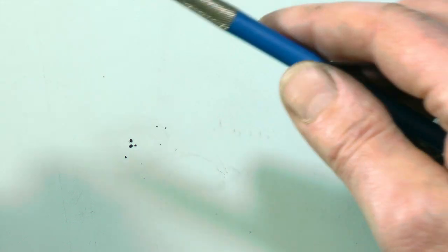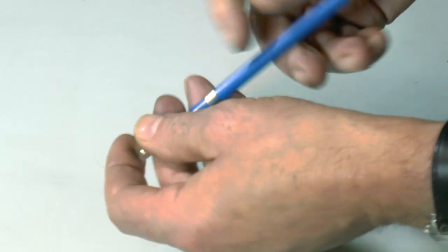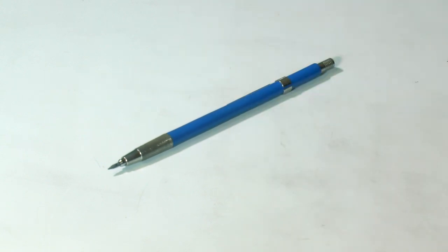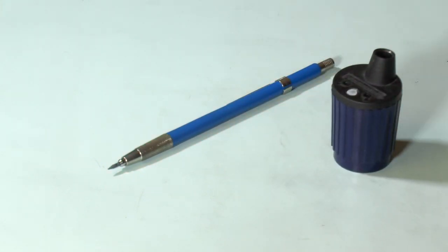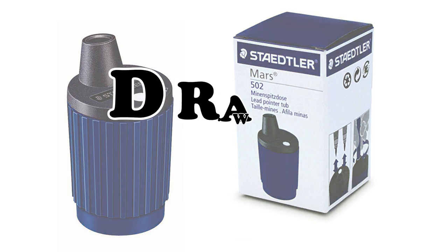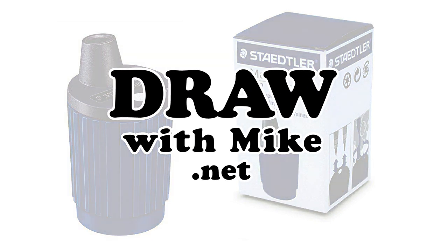So that's how to use the 520 tub sharpener. And the most important part is, don't force the lead down into the tub. Feed it in gently as you turn the top. For more helpful drawing tips and tricks, subscribe to my channel and explore all the videos with me at drawwithmite.net